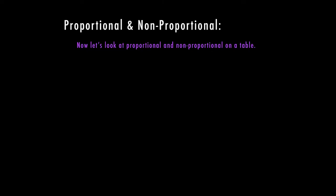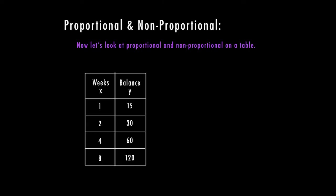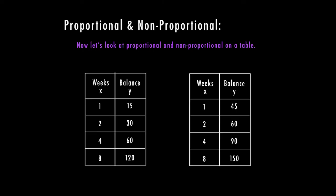The last thing we want to look at is proportional and non-proportional on a table. So here we have two tables. And one of the things we're going to do here is not just determine our consistency, but we have to figure that out based on our change. In this first table, I'm going from 15 to 30, so that means I'm adding 15. Then I go from 30 to 60, which means I'm adding 30. And then 60 to 120 means I'm adding 60.